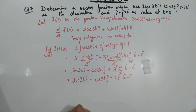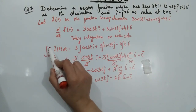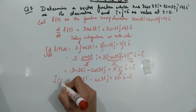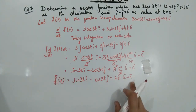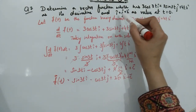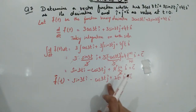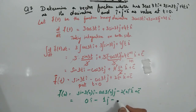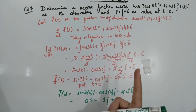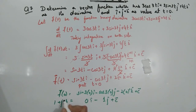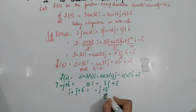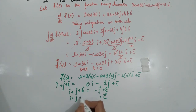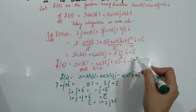After simplification: f(t) equals sin(3t)i minus cos(3t)j plus 2t squared k plus C. Now use the condition f(0) = i + j + k. Putting t=0: sin(0)=0 for i, minus cos(0)=minus 1 for j, 2 times 0 squared=0 for k, plus C equals i plus j plus k. So we get minus j plus C equals i plus j plus k, meaning C equals i plus 2j plus k.